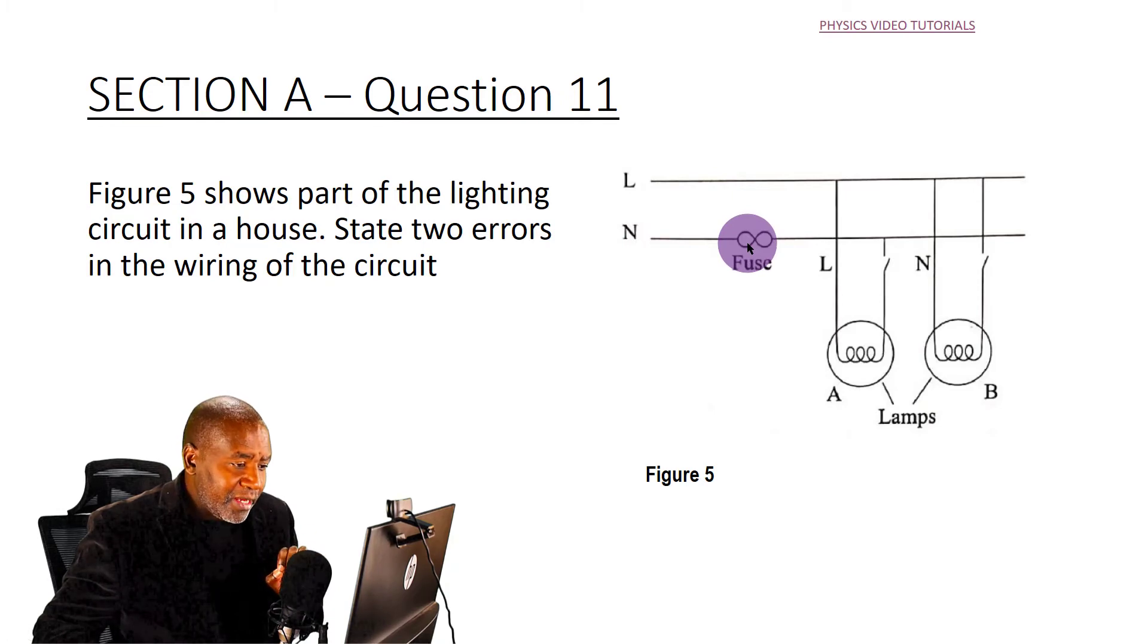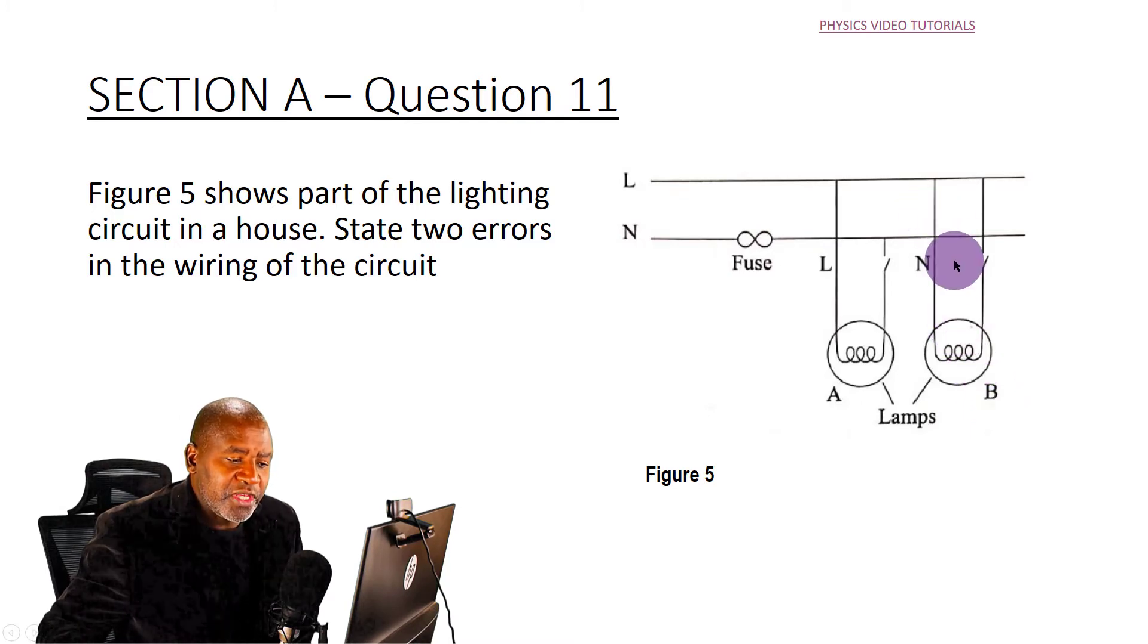The other error is that when you look at lamp B, both wires of lamp B are connected to a point which is at the same potential, 240 volts each. There is no potential difference across the lamp, so this lamp will not work because both wires are connected to the live wire.